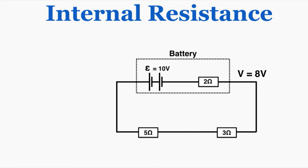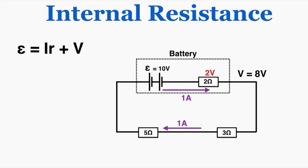Going back to this problem, the current flowing through this is 1 amp, so the voltage drop inside of the battery is 2 volts. The EMF is going to be equal to that voltage drop inside of the battery plus the terminal voltage of the battery. So basically whatever voltage drop happens outside of the battery plus whatever voltage drop happens inside the battery — IR — those two things added together are equal to the EMF. In this case the outer voltage drop is 8 and the inner voltage drop is 2, so altogether the EMF is clearly 10 volts.